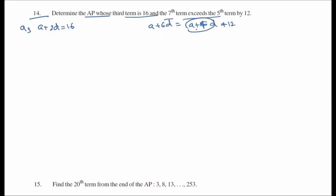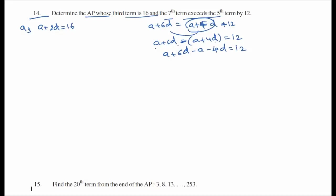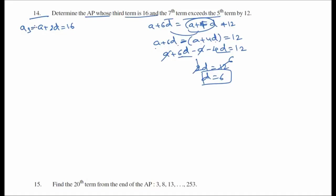The 7th term minus the 5th term equals 12: (a plus 6d) minus (a plus 4d) equals 12, so 2d equals 12, therefore d equals 6.